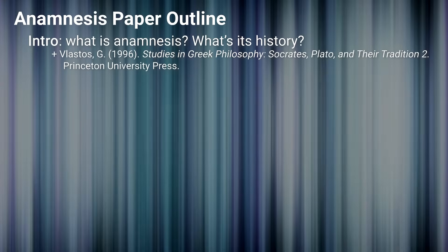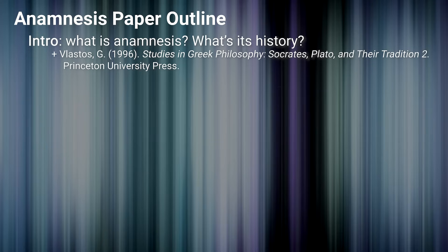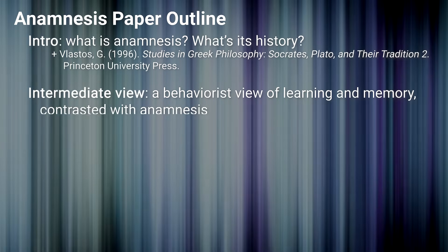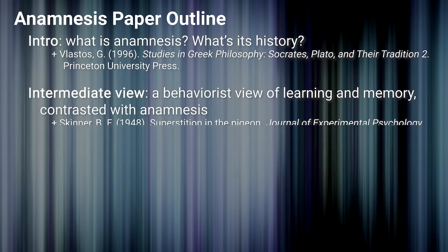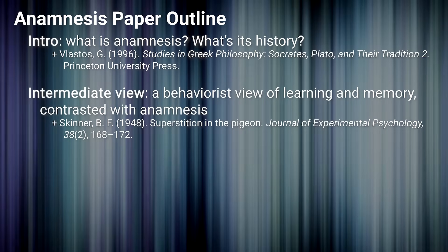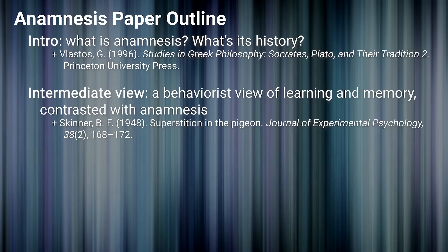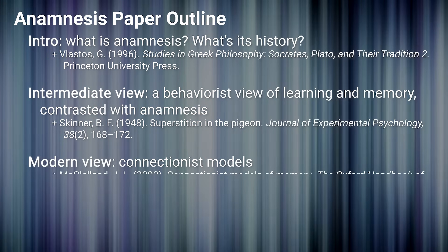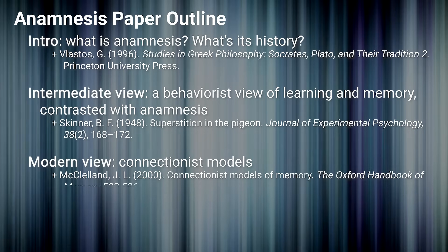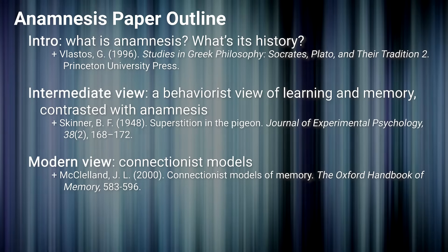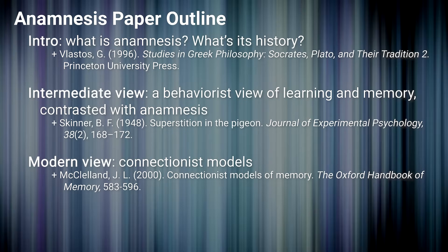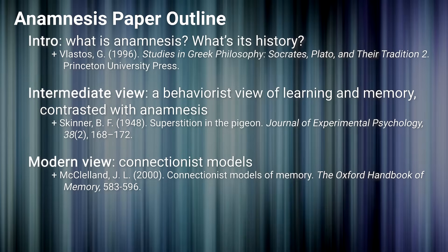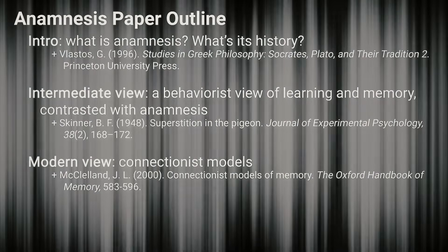One: hunt down the original concept — what was it, who came up with it? Then to bulk up the paper and show your competency, go for an intermediary view of learning. Let's go with the behaviorists because they were memorable, if nothing else, and talk about how their work contradicts anamnesis. Finally, close it out with some aspect of the current view of how we learn info, really driving home how it's changed since Socrates' time. For each of these points, you would need to cite the reference when you first start talking about it. After that, as long as you don't change sources or paragraphs, you're good — as long as you're paraphrasing.